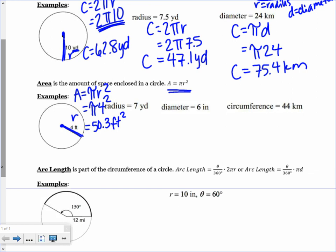For this one, it says a radius of 7. So area again equals πr². Our radius is 7, so I'm going to plug in a 7 for my r. And I should get about 153.9, and the units would be yards squared.